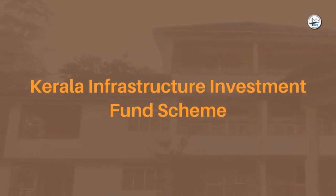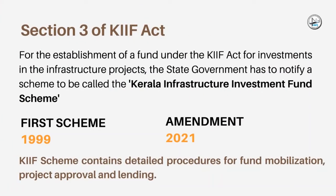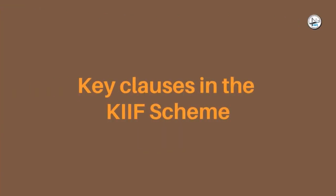Let's move on to the next topic: Kerala Infrastructure Investment Fund Scheme, KIF Scheme. As per section 3 of the KIF Act, for the establishment of a fund for investments in the infrastructure projects of the state, the government has to notify a scheme called the Kerala Infrastructure Investment Fund Scheme, KIF Scheme. The first scheme was notified in the year 1999 and was amended in 2021. The KIF Scheme contains detailed procedures for fund mobilization, project approval and lending.